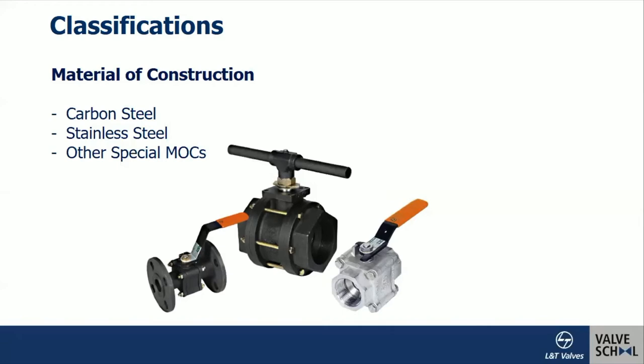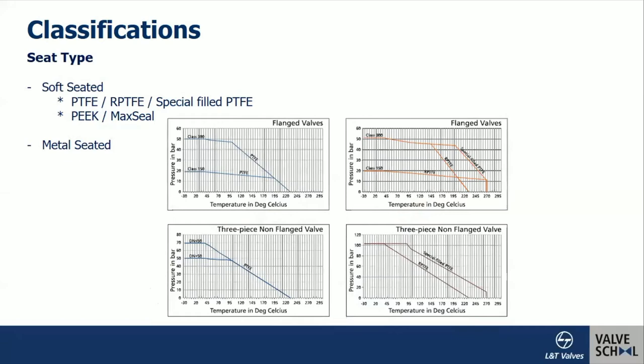Now we look at classification based on seat type. There is a soft-seated valve and a metal-seated valve. Valves like gate, globe, and check are intrinsically metal-seated, while ball, butterfly, and plug valves are available in both soft-seated and metal-seated options. The advantage of soft-seated valves is that they can provide 100% bubble-tight sealing — zero leakage.